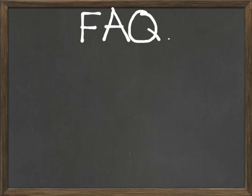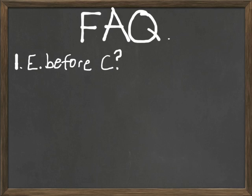Before finishing, let's address some frequently asked questions. Must evidence come before commentary? No — sometimes commentary actually introduces the evidence to follow. The important thing is that commentary sufficiently links evidence to the assertion. If you're using two pieces of evidence to make the same point, you could use a single piece of commentary, but if your reader gets lost, you probably need more commentary than you realized. My rule of thumb is to alternate equal amounts of evidence and commentary.